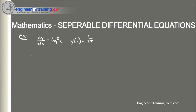We divide through by y² to get y⁻² dy, and then multiply through by dx to get 6x dx. So that's simply rearranging the equation back into the form of a separable differential equation.